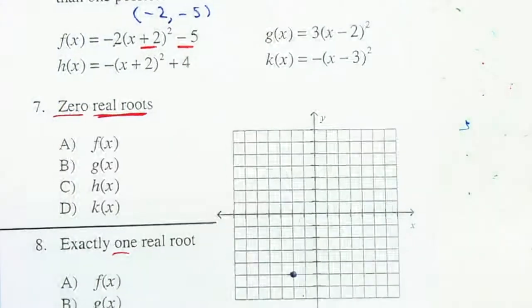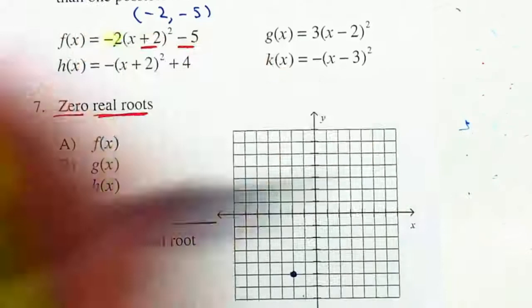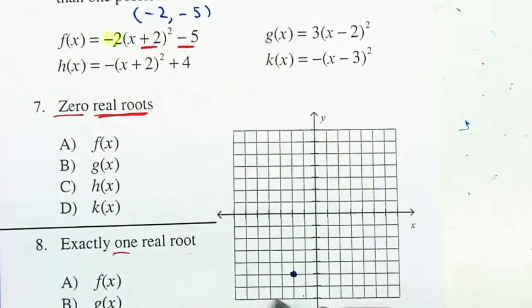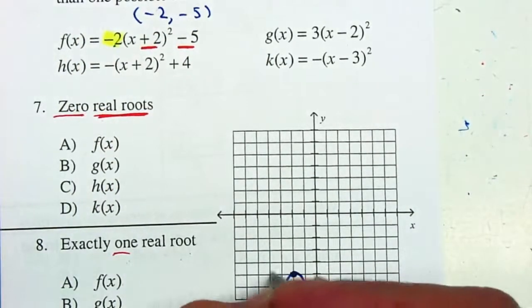In this case, this is a negative 2. So this parabola is facing down. And I'm just going to label it f of x.